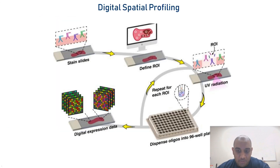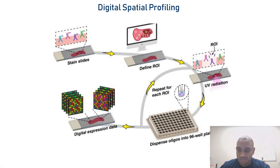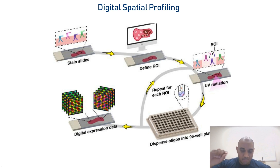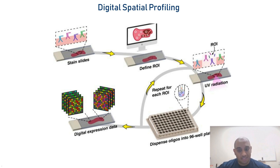One of the technologies we've used is digital spatial profiling from NanoString Technologies, which essentially allows you to take a single unstained FFPE tissue section. The biggest benefit is that you can use archival samples from pathology banks, shipped at room temperature around the world. You define regions of interest within the tissue, and liberate transcript or protein data using tiny mirrors that shine UV light above those regions, liberating oligo tags from cleavable linkers, which are deposited in a 96-well plate — giving you digital expression counts per region of interest.